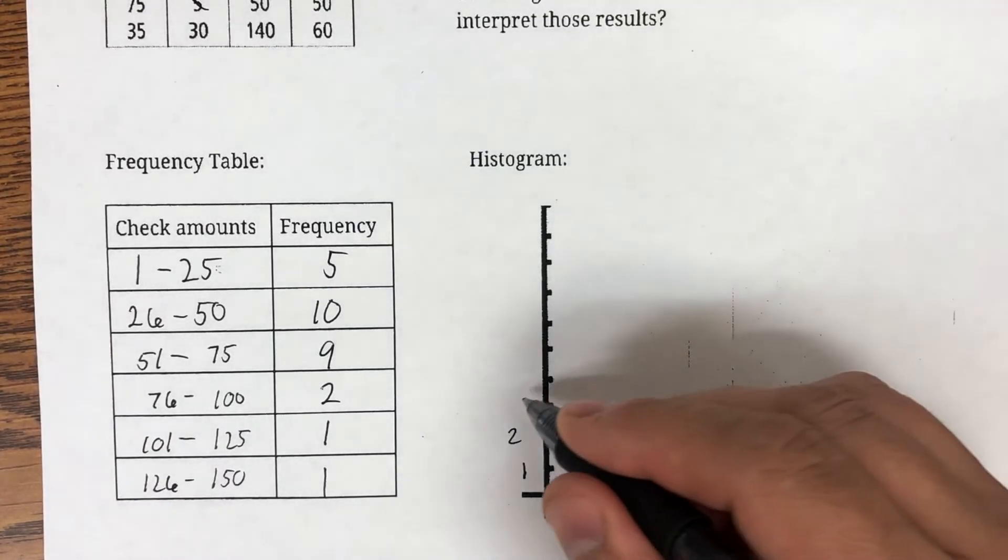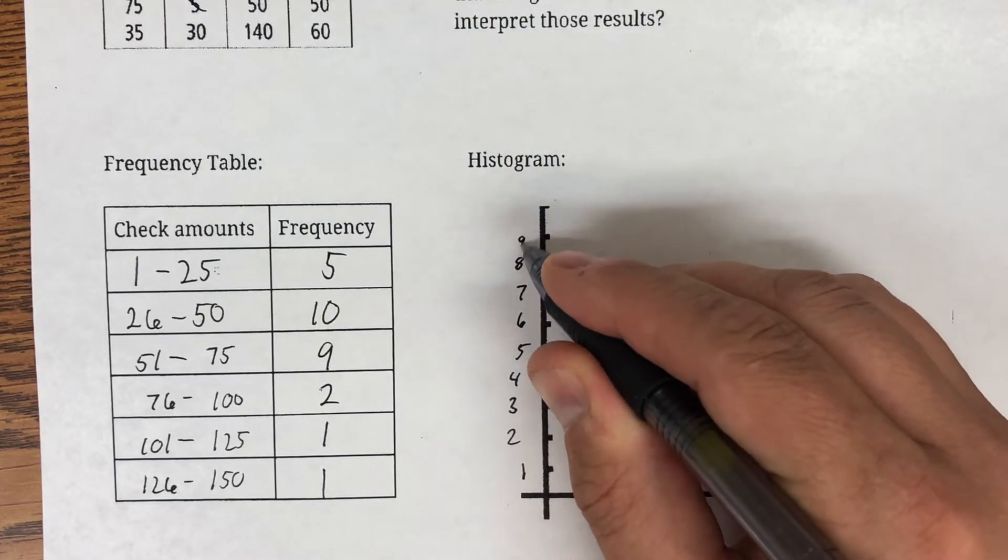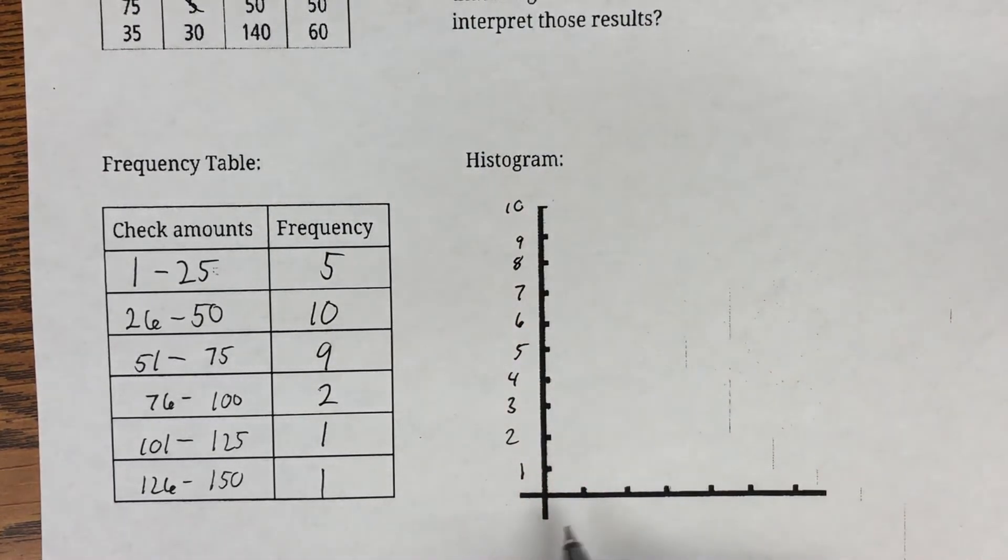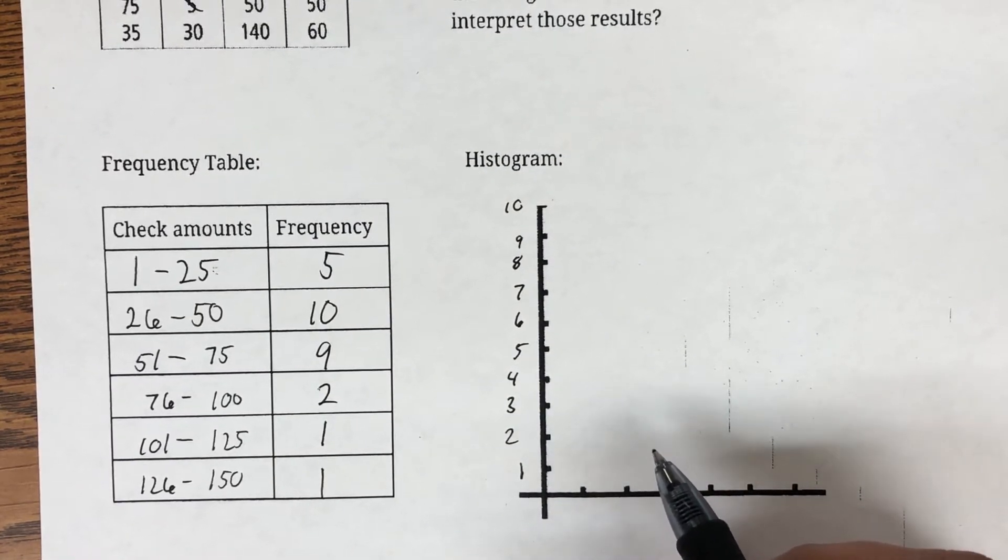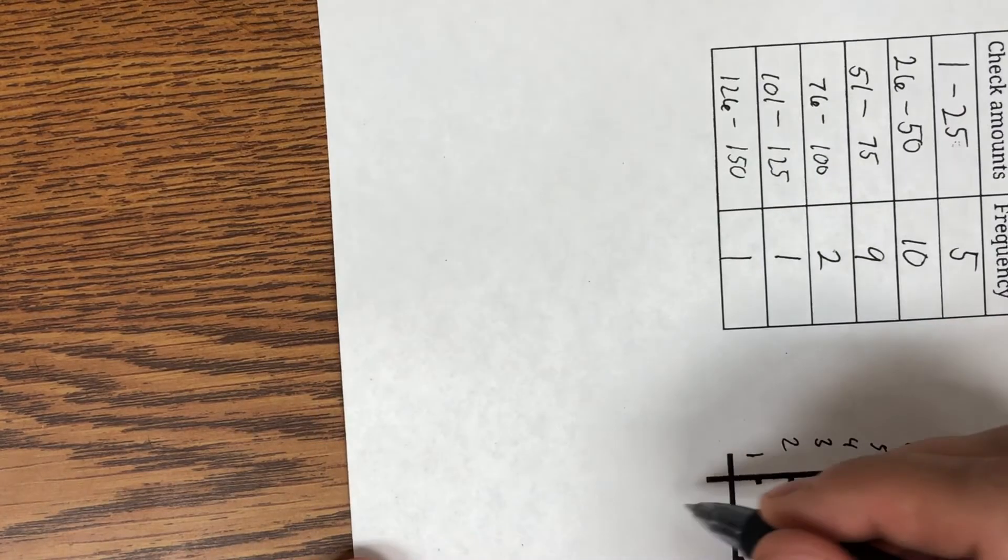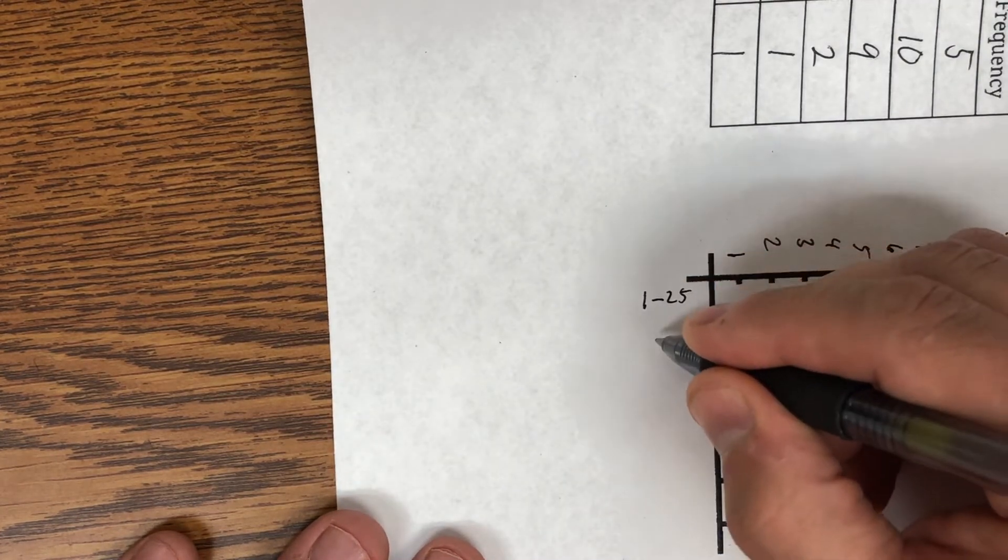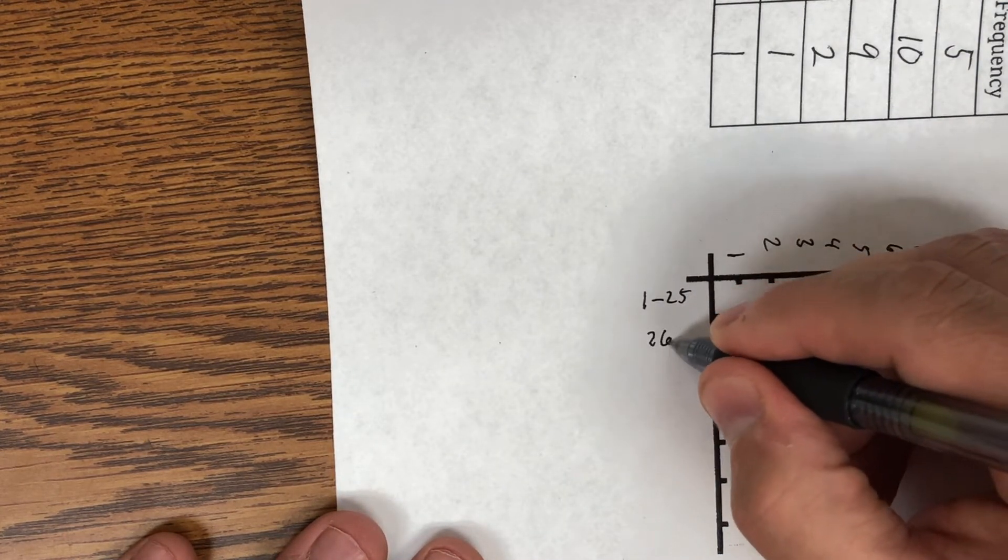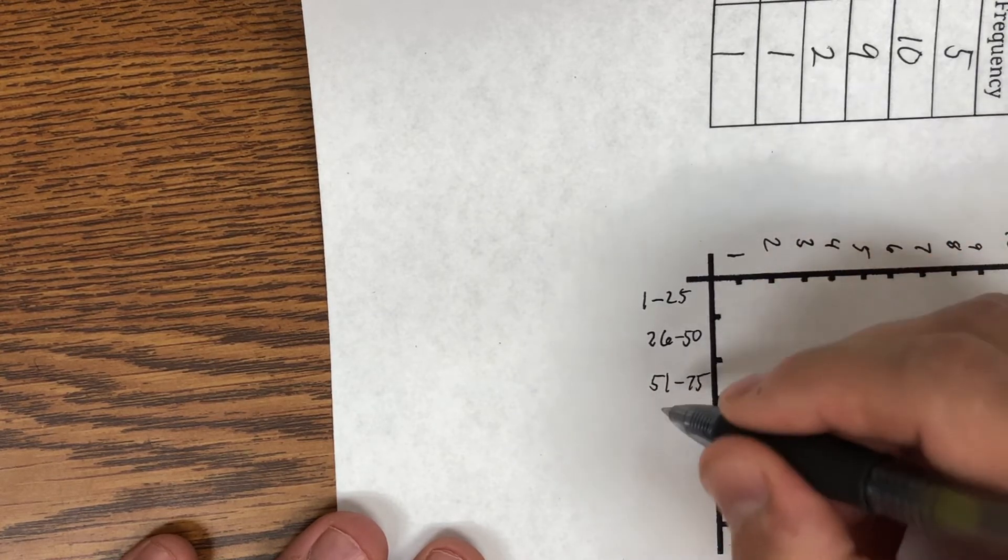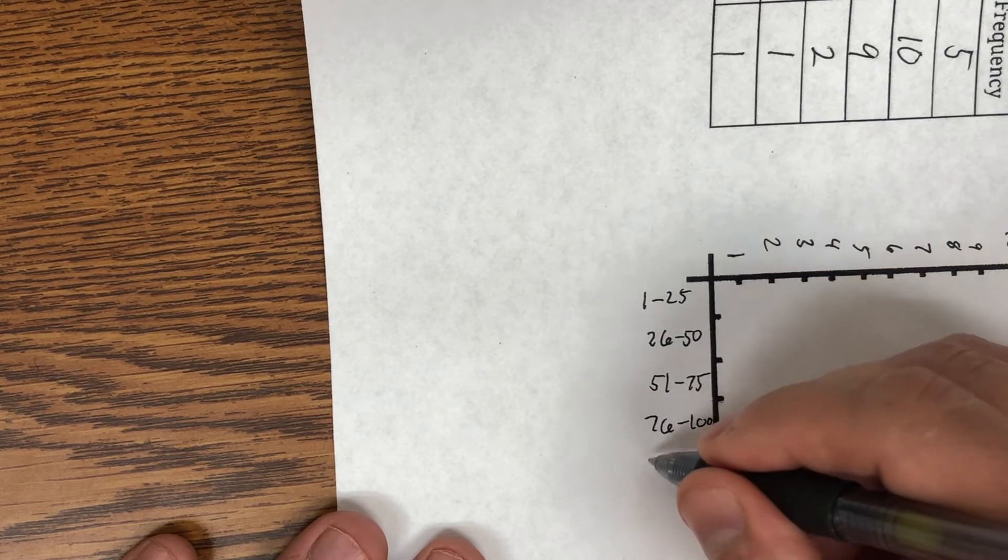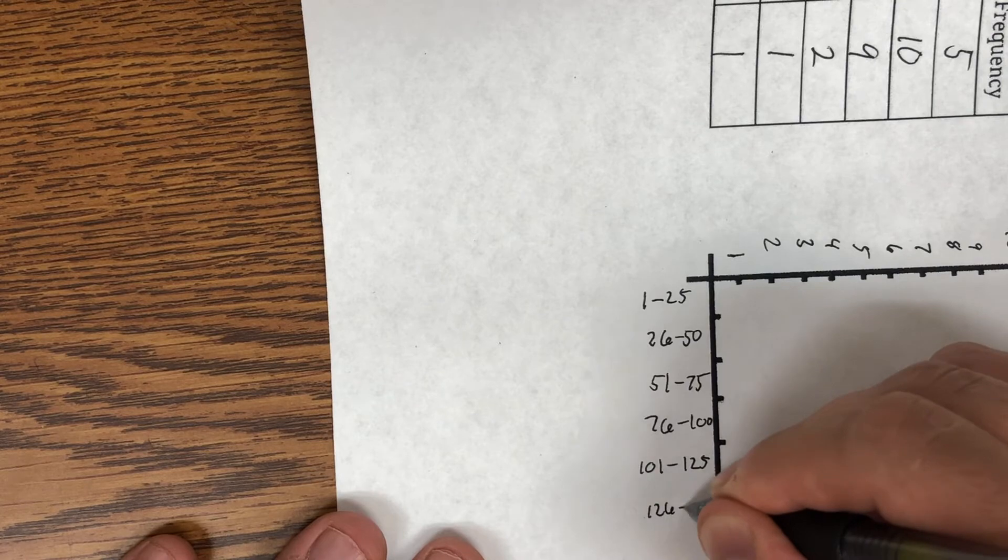So I'm going to go from 1 to 10 by 1 on my graph. So, 1, 2, 3, 4, 5, 6, 7, 8, 9, and 10. Now, my first frequency was between $1 and $25. So, I'm going to turn my paper sideways so it's easier for me to see this. $1 to $25. And then, I had $26 to $50, $51 to $75, $76 to $100, $101 to $125, $126 to $150.